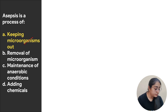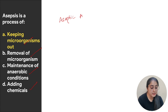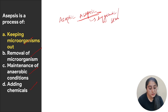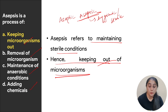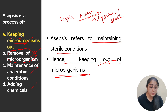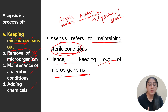The next question: asepsis is a process of — options are keeping microorganisms out, removal of microorganisms, maintenance of aerobic conditions, or adding chemicals. Asepsis refers to keeping microorganisms out, or basically maintaining completely hygienic or sterile conditions. Removal of microorganisms is done in processes like pasteurization or sterilization where they are already present. In aseptic conditions we maintain completely sterile conditions — keeping microorganisms out from the start — therefore the correct answer is keeping microorganisms out.